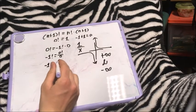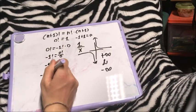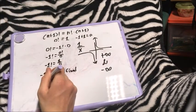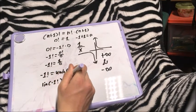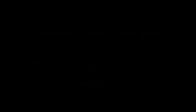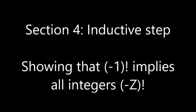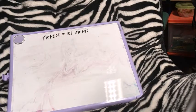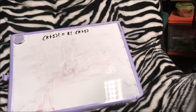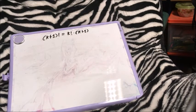Thus, (-1) factorial being equal to 1/0 is equivalent to saying (-1) factorial is undefined, or that the limit of (-1) factorial is divergent. We could write it formally as: since -1 is a negative integer and its factorial is divergent, and all integers less than -1 are also negative, all negative integers in the factorial function are divergent. But let's walk through this more carefully.